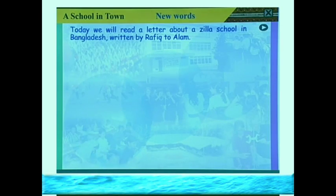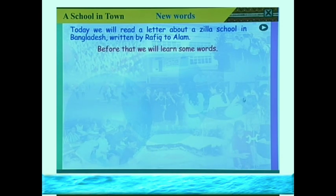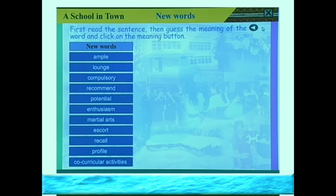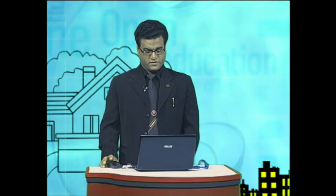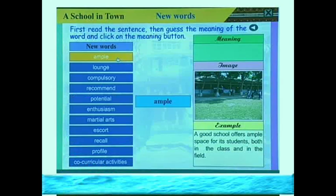Today we will read a letter about a Jala school in Bangladesh, written by Rafik to Alam. Before that, we will learn some words. The first word is 'ample.' Example: A good school offers ample space for its students, both in the classes and in the field. The meaning of ample is: plenty of, a lot of, huge.